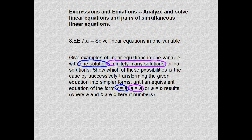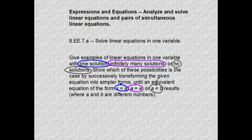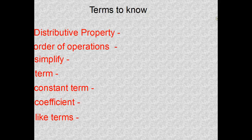The third thing that could occur is that nothing will work — there's no number off the number line that will work for the variable. We call that no solutions. The standard recognizes it as A equaling B, where A is never equal to B, which makes sense that there would be no solutions.